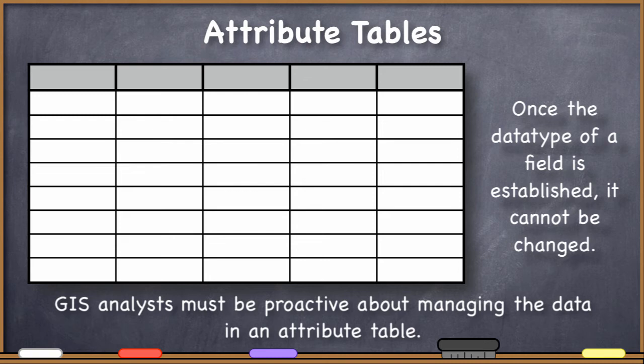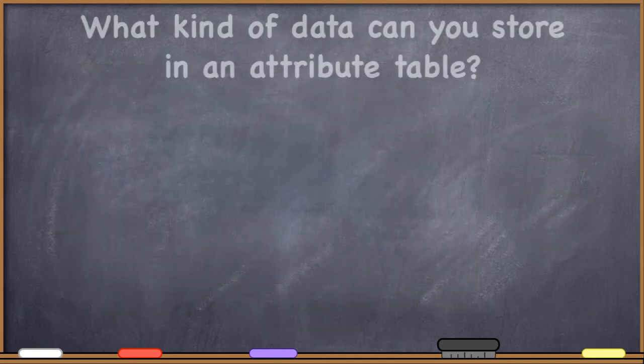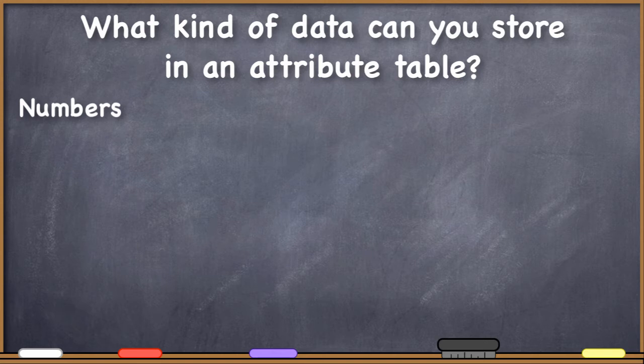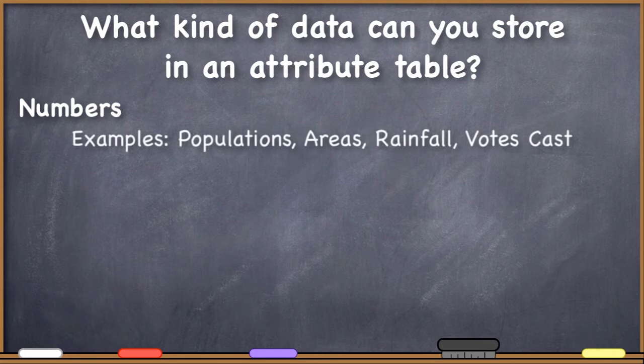So what kinds of data might you want to store in the attribute table? Well, there are a number of different options, and we'll address them in no particular order. For one, it's particularly common to want to store numbers in the attribute table. We can easily think of hundreds of reasons we might want to store numbers in an attribute table.